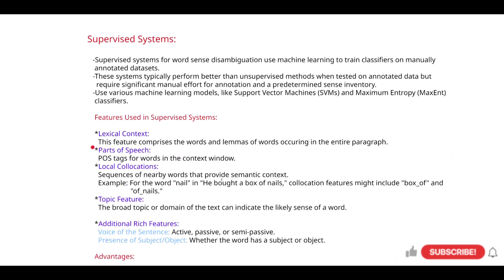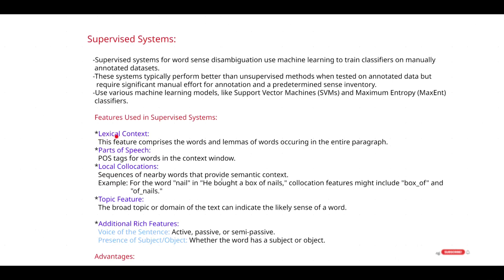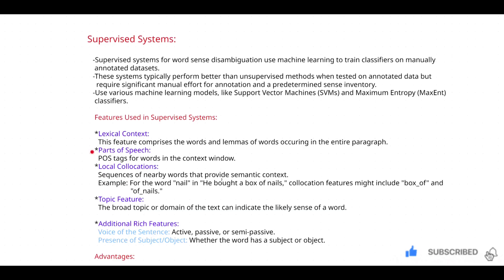Now let's look at the features used in supervised systems. The first feature is lexical content — the name tells us we are going to search for lexemes in a given sentence, taking the lexemes from it. The second feature is parts of speech — for a given sentence, you annotate each word with parts of speech tags.